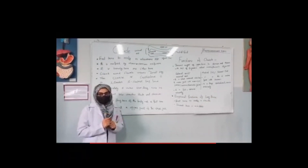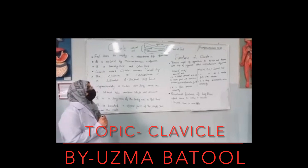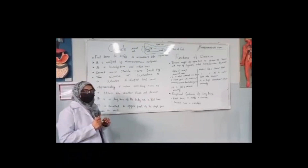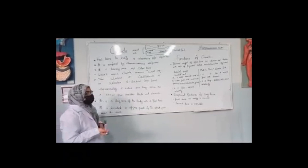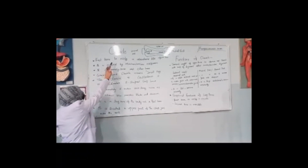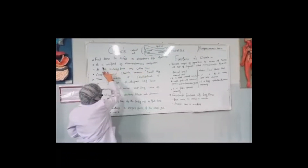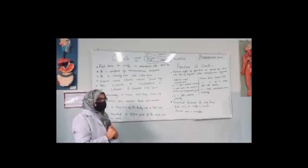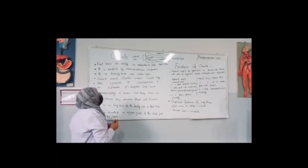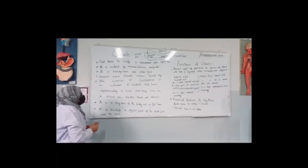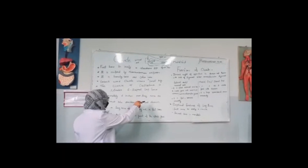Assalamualaikum. My name is Uzum Patul, a student of OSH International Medical University, first year. Today my topic is the clavicle. The clavicle is ossified by intramembranous ossification. It is the beauty bone or collar bone, and its name means 'small key.' The clavicle is a slender, S-shaped long bone.